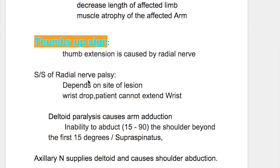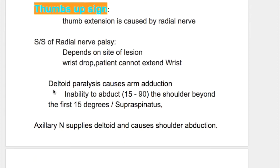What are the signs and symptoms of Radial Nerve Palsy? It depends on the site of the lesion, but the most common feature is a wrist drop. And what's a wrist drop? The wrist is flexed and cannot be extended because of the loss or paralysis of extensors.